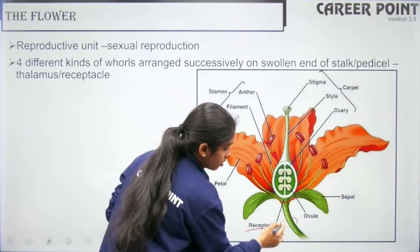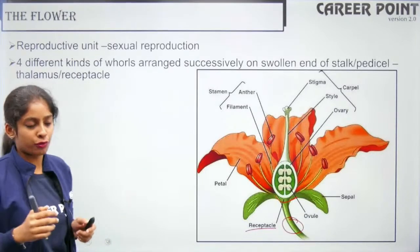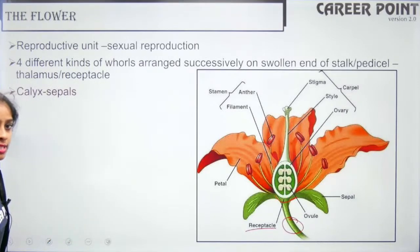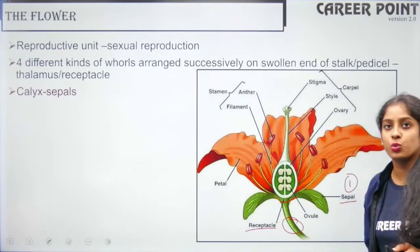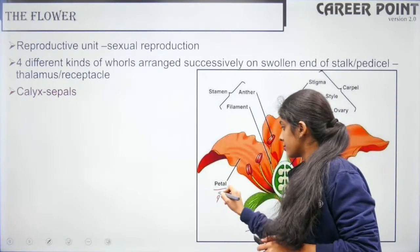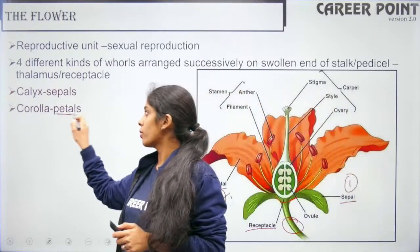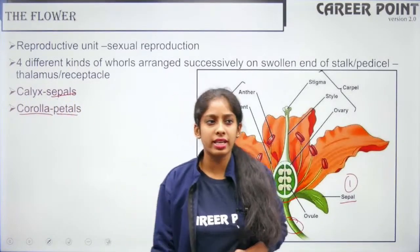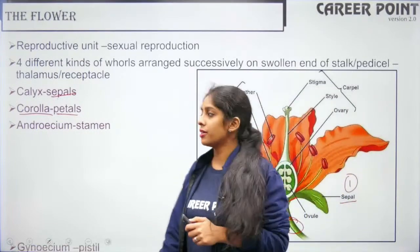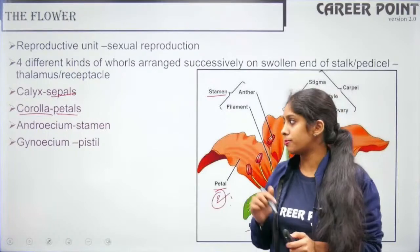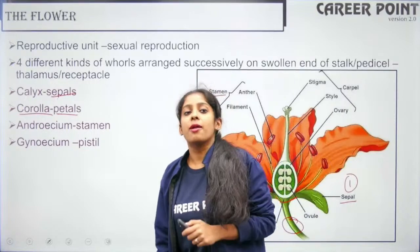The receptacle or thalamus sits on a swollen base called the stalk or pedicel. Above the pedicel you have the receptacle with four parts: first is calyx (sepals) — the green, leaf-like outermost structures; second is corolla (petals) — always colorful; third is androecium (stamens) — the male reproductive part; fourth is gynoecium (pistil) — the female reproductive part. So: sepal, petal, stamen, carpel.